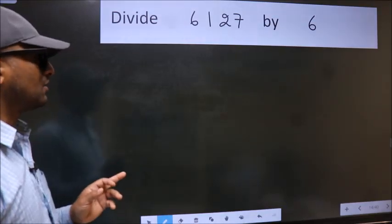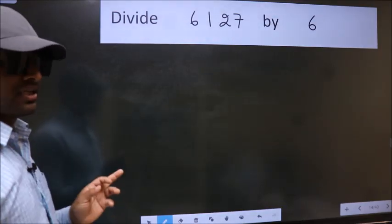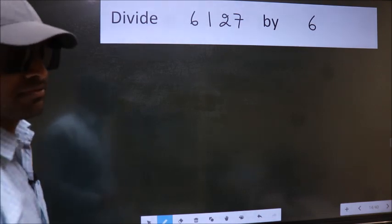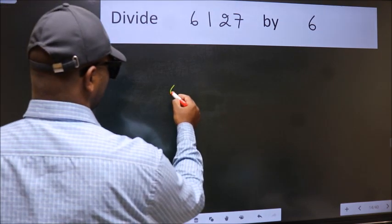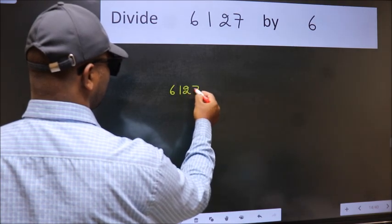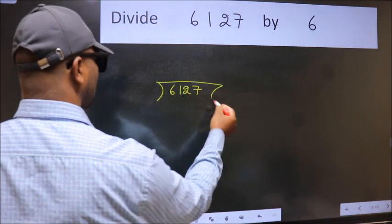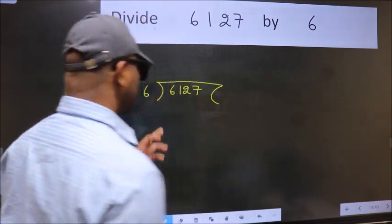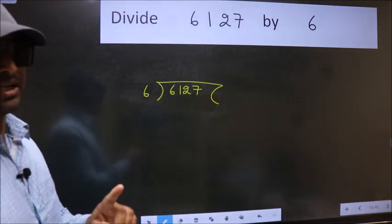Divide 6127 by 6. To do this division, we should frame it in this way. 6127 here, 6 here. This is your step 1.